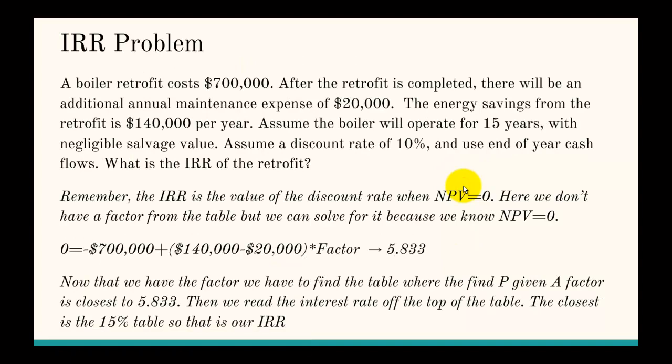Now let's look at internal rate of return, or IRR. Same problem, and we're trying to figure out what the IRR of the retrofit is. The IRR does not depend on the discount rate. The only way IRR and discount rate are related is: if you find an IRR greater than the discount rate, you would go through with the project; if the IRR is less than the discount rate, you would not. The key thing to remember about IRR is it's the value of the discount rate when the net present value is zero. The problem is IRR is a rate — basically a discount rate — so we don't know which table to use or where to get the factor from.